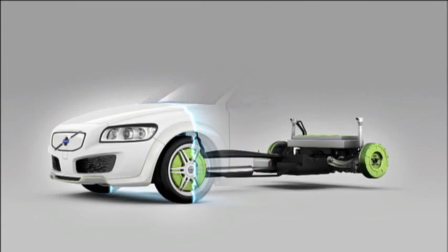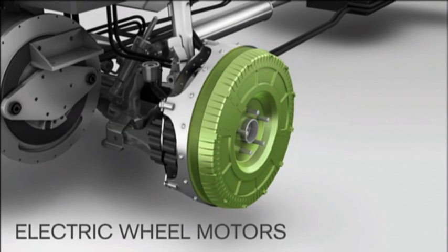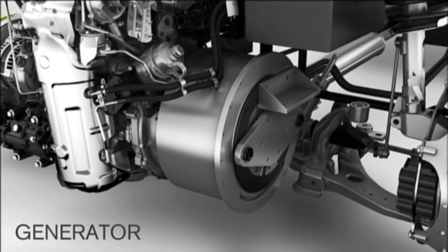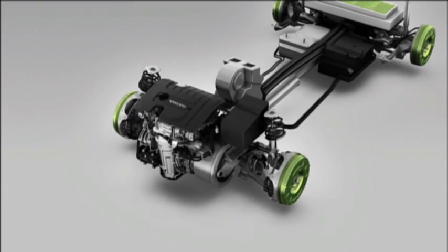Four electric motors, one at each wheel, provide independent traction. The generator recharges the batteries and powers the wheel motors when the battery is low.